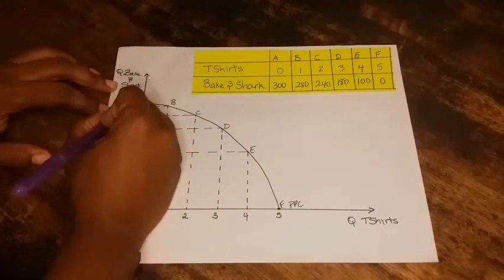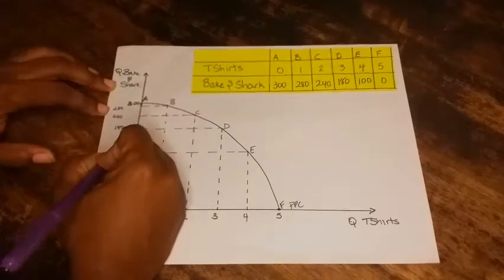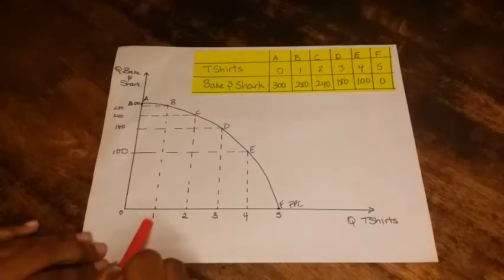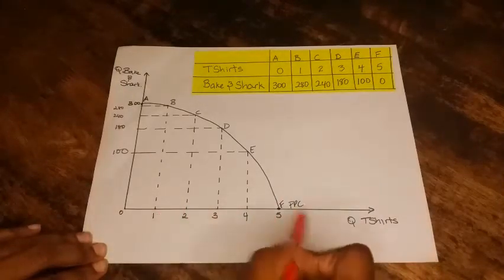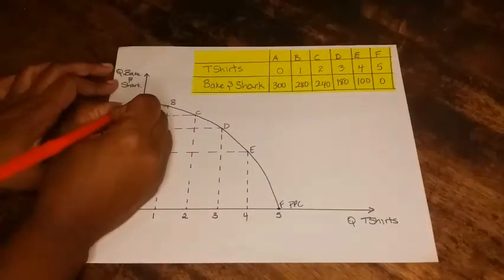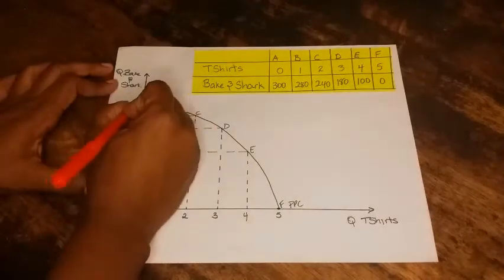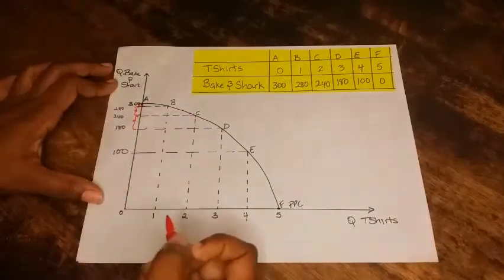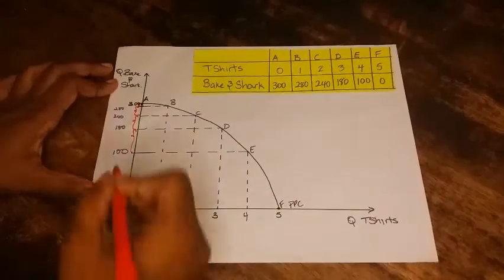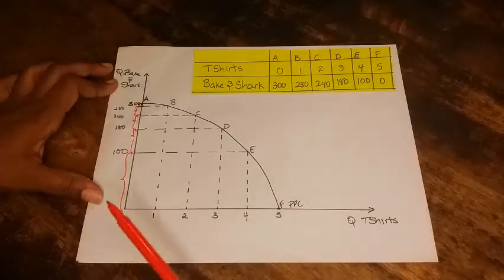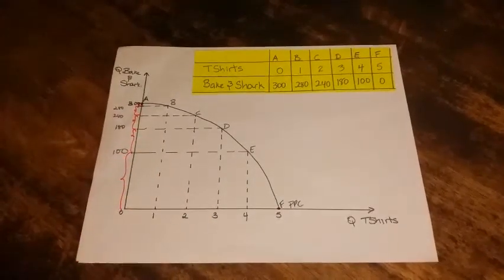So we have 300, 280, 240, 180, 100, and zero. I want you to notice that as we increase the quantity of t-shirts being produced by one unit, look at what is happening in terms of what we have to give up in terms of bacon shark. Notice that the amount keeps increasing — look at the small amount we give up initially, compared to when you move from 280 to 240, then 240 to 180, then 180 to 100, and 100 to zero. With each additional unit of t-shirts, I'm giving up more and more units of bacon shark, and this is called increasing opportunity cost.